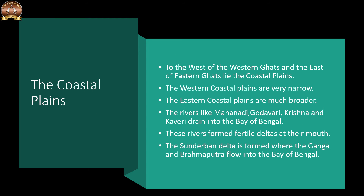To the west of the Western Ghats and the east of the Eastern Ghats lie the Coastal Plains. The Western Coastal Plains are very narrow, but the Eastern Coastal Plains are much broader. A number of east-flowing rivers like the Mahanadi, Godavari, Krishna and Kaveri drain into the Bay of Bengal. These rivers have formed fertile deltas at their mouths. The Sundarbans Delta is formed where the Ganga and the Brahmaputra flow into the Bay of Bengal.